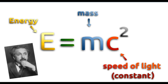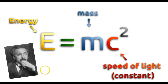Hey you guys, this is Mr. Millings and today we're going to talk about the most famous equation in the world: E equals mc squared, or energy equals mass times the speed of light squared. So what does this equation mean and what did Albert Einstein have in mind when he developed this idea?